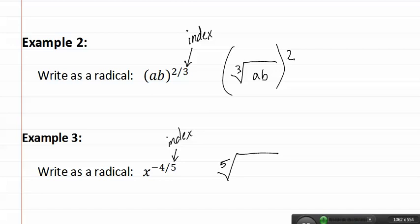Now, we would have the fifth root of x to the negative four, but remember we don't have negative exponents. So actually, this would be the fifth root of x to the fourth in the denominator. This is the more correct way to write this.